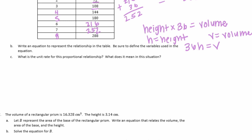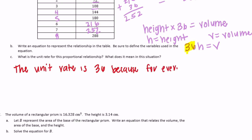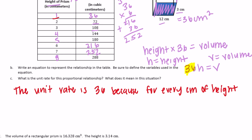What is the unit rate for this proportional relationship? The unit rate is how much it increases by. In this situation, the unit rate is 36, because for every one centimeter of height, the volume increases by 36 centimeters cubed.